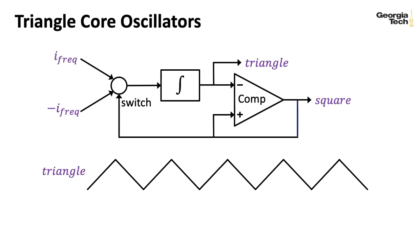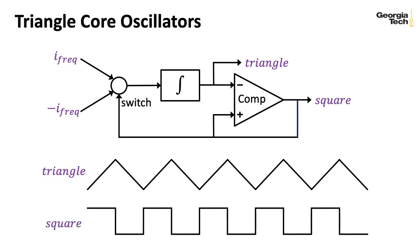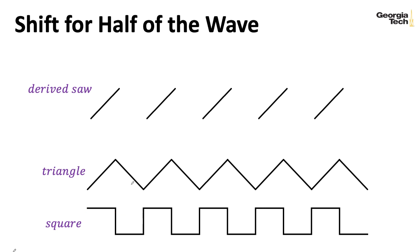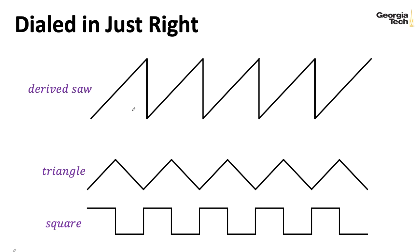One property of the Buchla 259 that we looked at — which it shares with other triangle core oscillators — is that it generates a nice square wave as a byproduct of generating the triangle wave. So to try to derive a sawtooth wave, let's imagine that during the first part of the square wave, when the square wave is high, we let the triangle wave pass through without messing with it. But during the part of the wave where the square wave is low, we do two things at the same time: we flip the waveform upside down, and we also shift it to match up with the part of the wave that we didn't change. And if we line this up right, we find that we've derived a sawtooth wave.